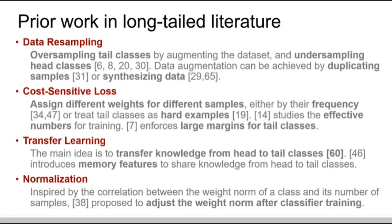Prior work in long-tailed literature tackles the problem mainly in four directions. Data resampling over-samples tailed classes and under-samples head classes. Cost-sensitive loss assigns different weights for different samples. Transfer learning-based methods transfer knowledge from head to tailed classes. Normalization techniques are also used to adjust the weight norm after training the classifier.